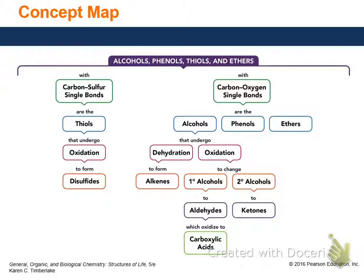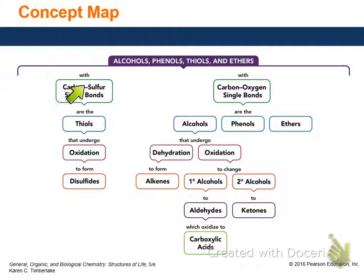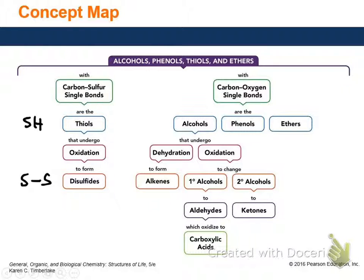Last slide — this is the summary concept map. This whole chapter was about alcohols, phenols, thiols, and ethers. We didn't do reactions of ethers because they don't really react — they can't be oxidized and they're not very reactive unless you have really strong acid. Carbon-sulfur single bonds are thiols; they undergo oxidation and form disulfides. So: SH → S–S, that's an oxidation reaction.